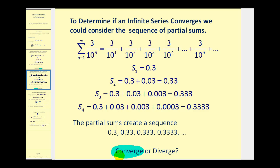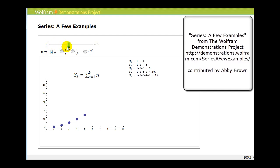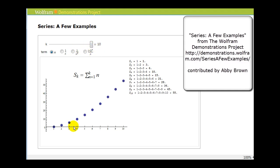Let's take a look at a few more examples graphically by looking at this animation. We're going to see the partial sums on the right and the graph of the partial sums on the left. As n increases from one to ten, we're seeing the graph on the left and the actual partial sums on the right. It does seem pretty obvious from this graph that it is increasing without bound, and therefore we would say this series diverges.